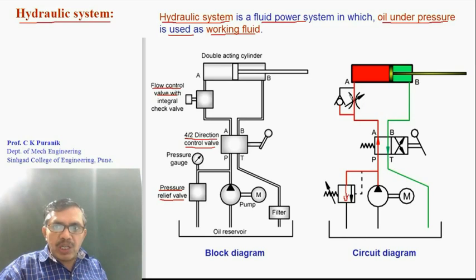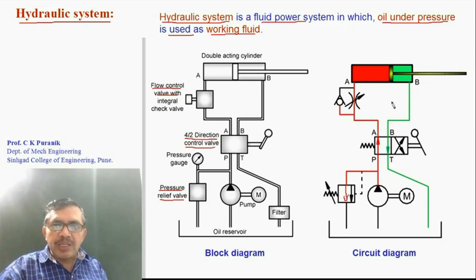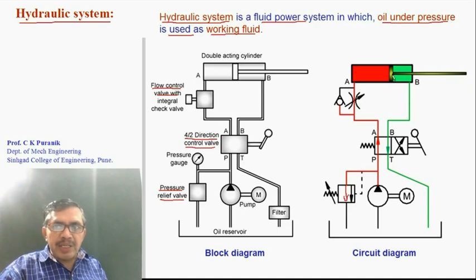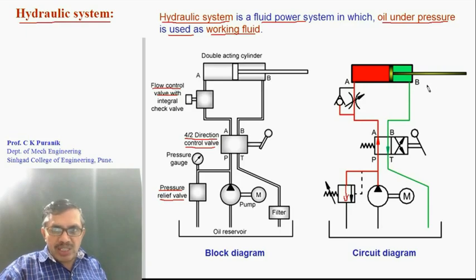The flow control valve adjusts the rate of flow of oil going into the cylinder so that the speed of extension can be controlled. There is also a check valve for reverse free flow. During retraction, oil flows freely through the check valve back to the tank, so retraction speed is uncontrolled. We will have higher retraction speed and slower extension speed.